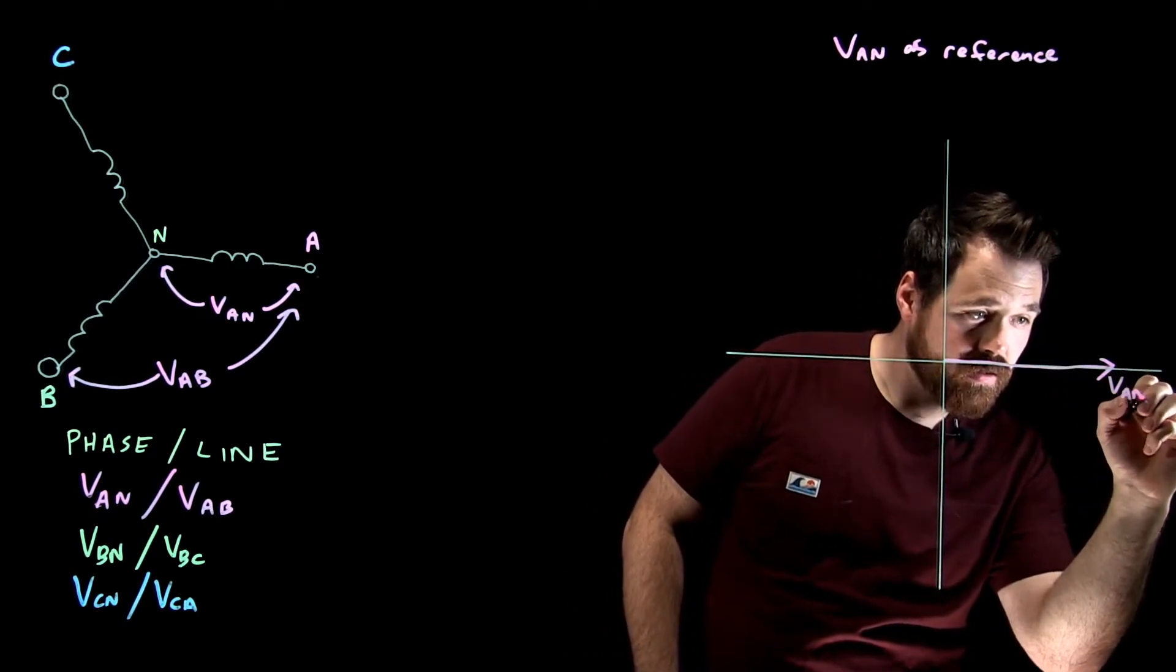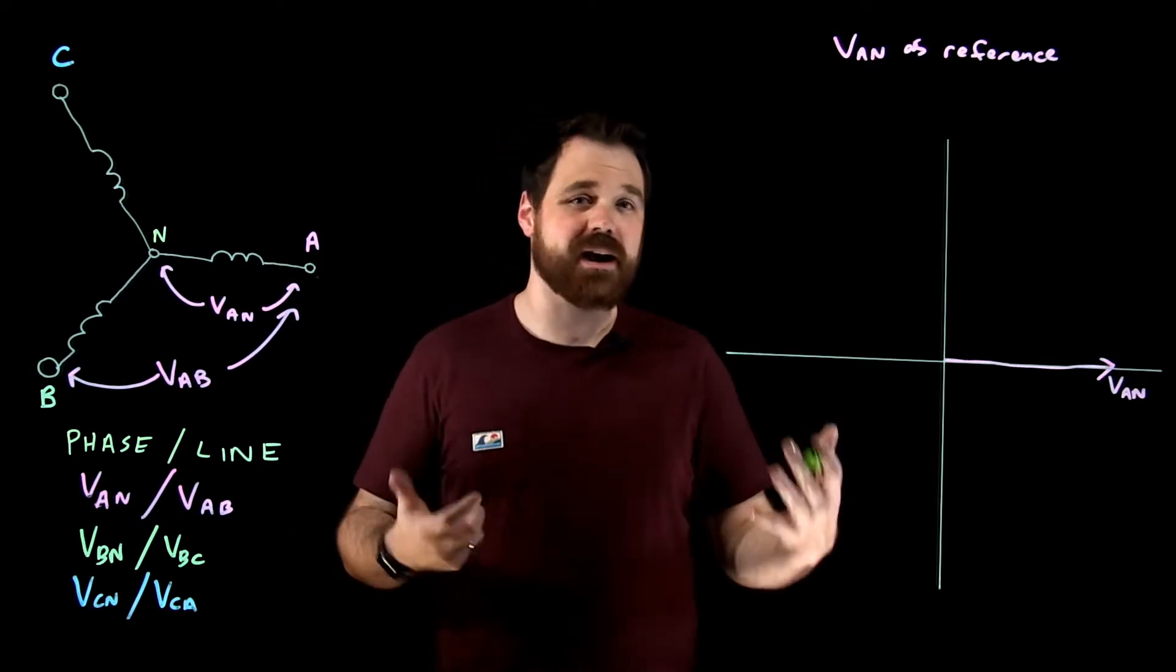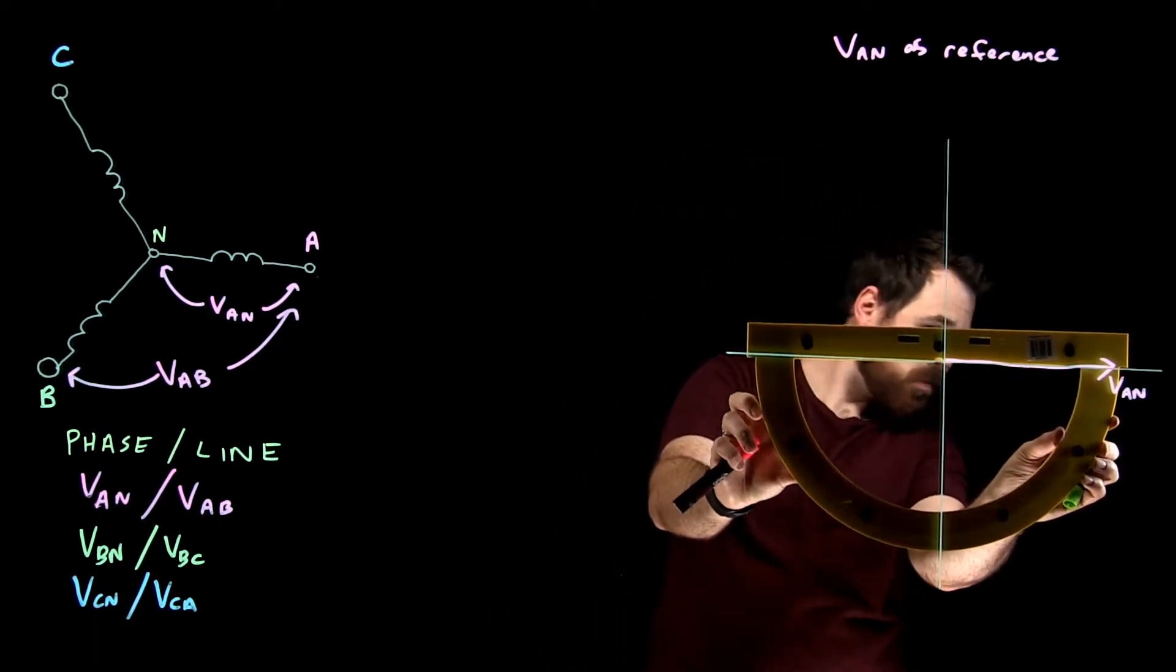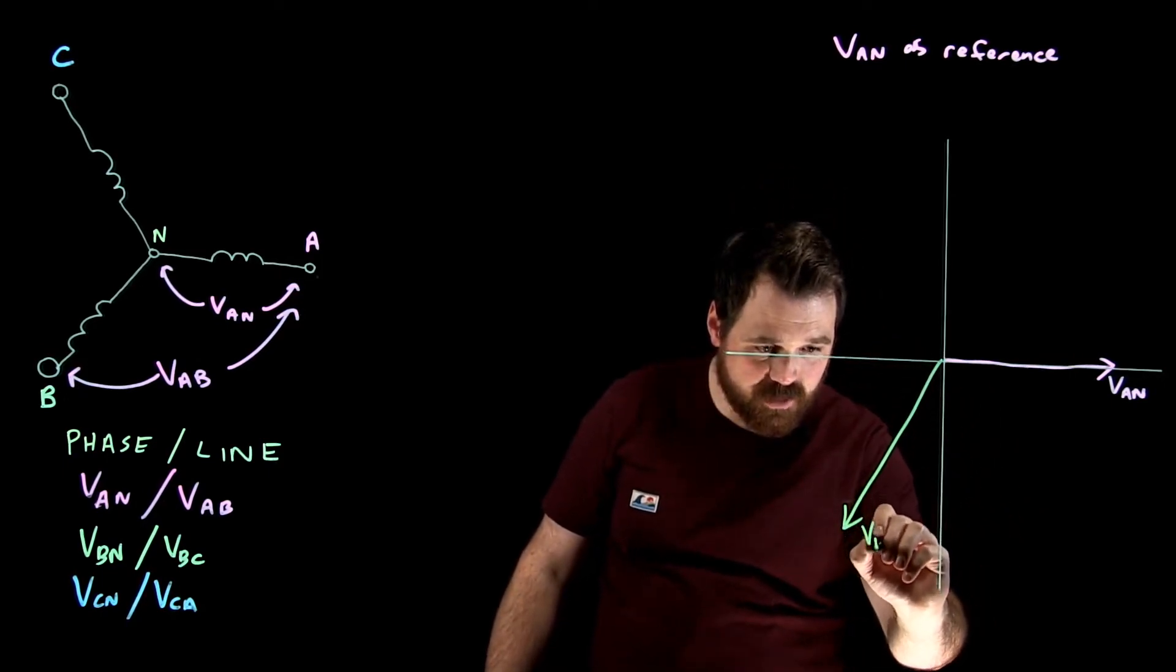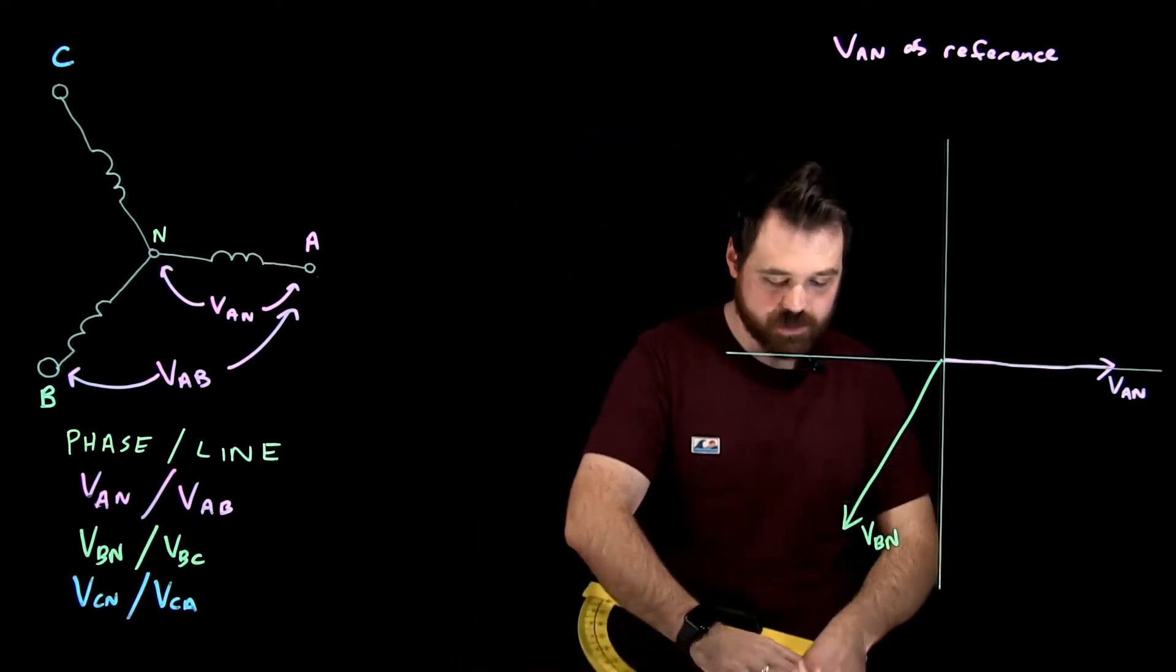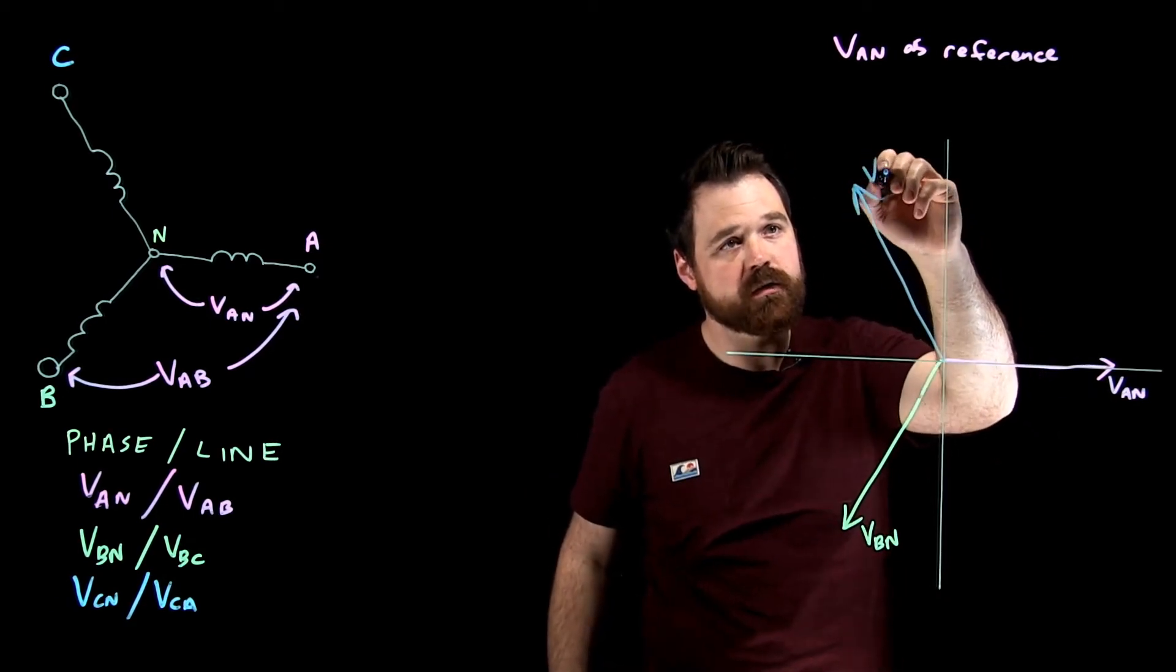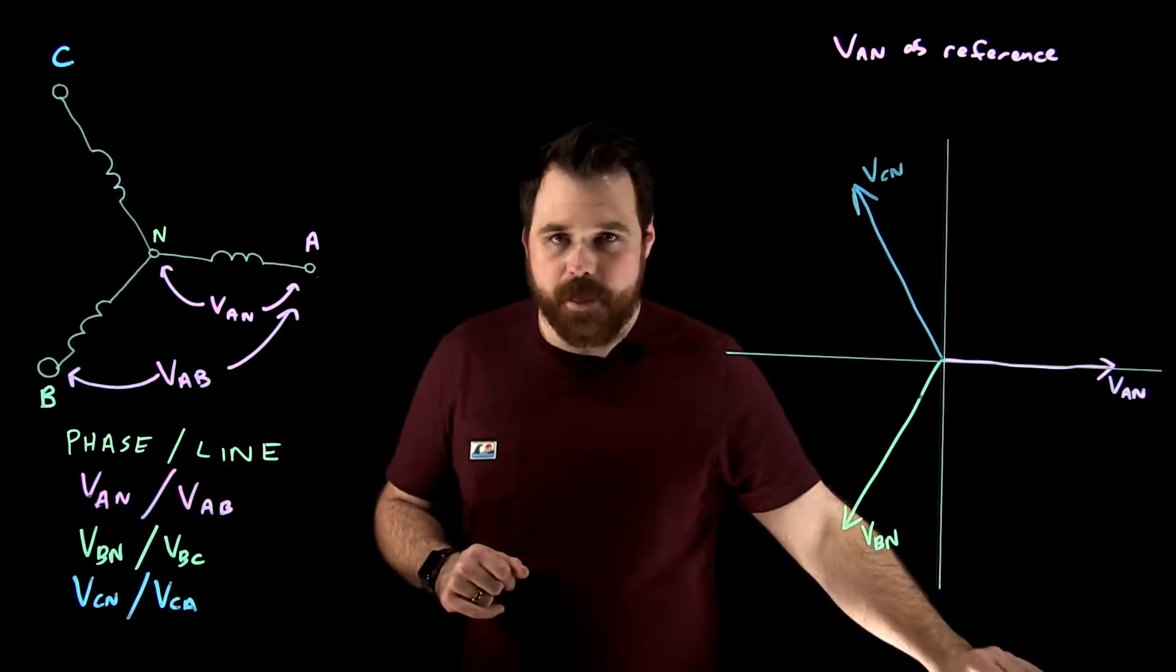That's V_AN. Then what we see is we'll keep going and we'll put V_BN with lag by 120 degrees. So as our phase diagram goes around, we would put V_BN down here. And now because it's 120 degrees, we get out our protractor and we would end up down here. This is V_BN. 120 degrees again would be where we would put our C phase. So we would put our C phase voltages right up here, that would be V_CN. So those would be our phase voltages and their relationships with each other.